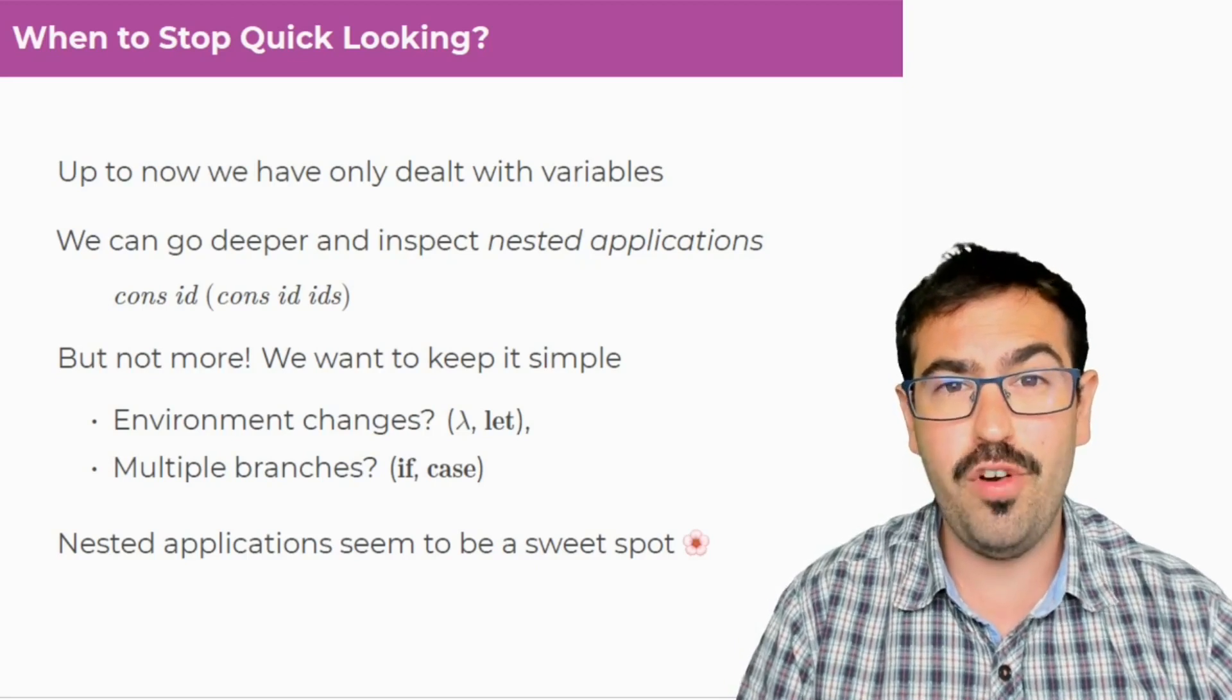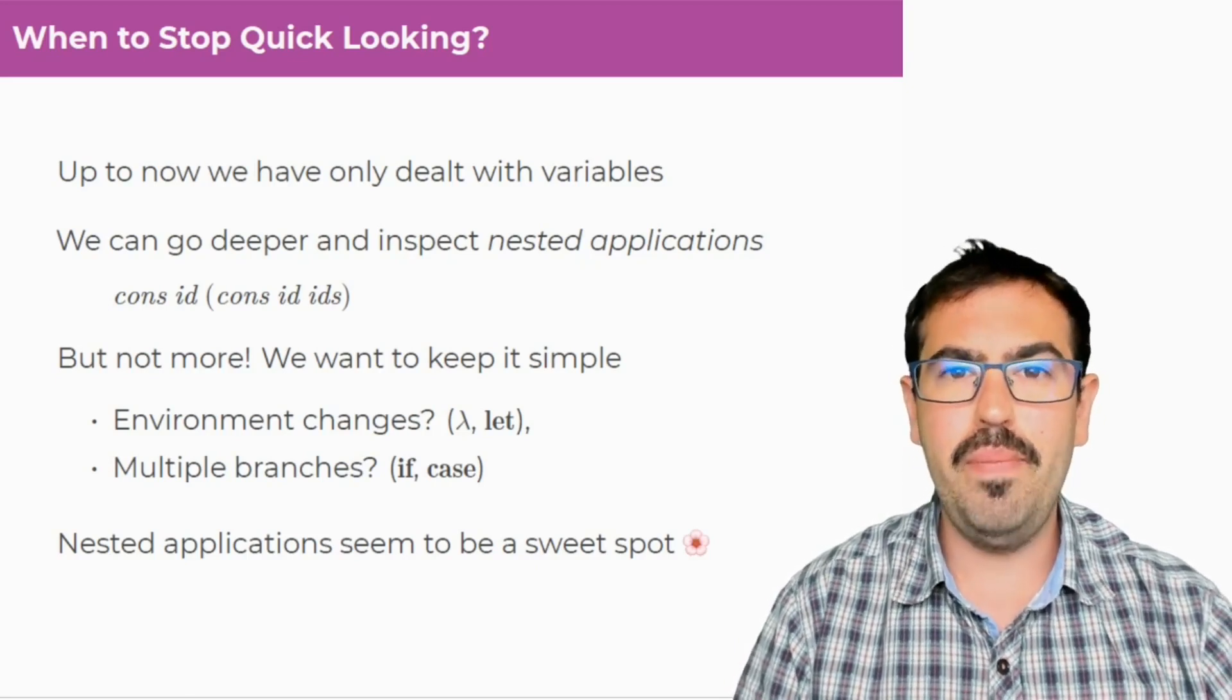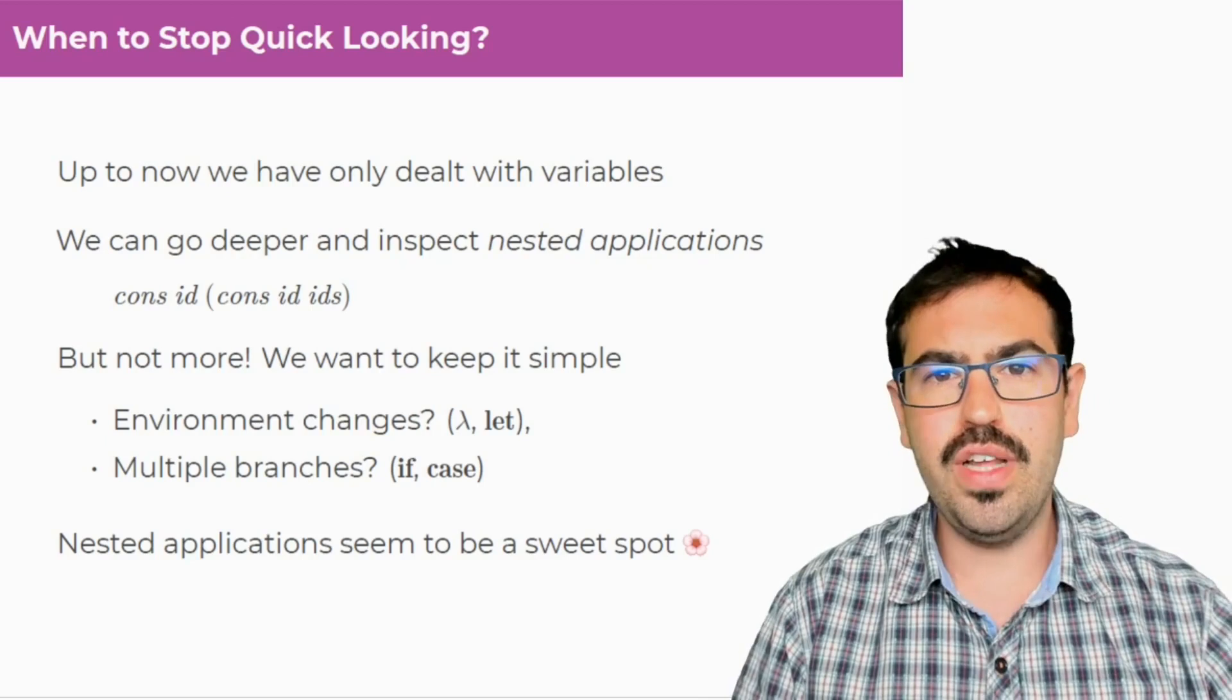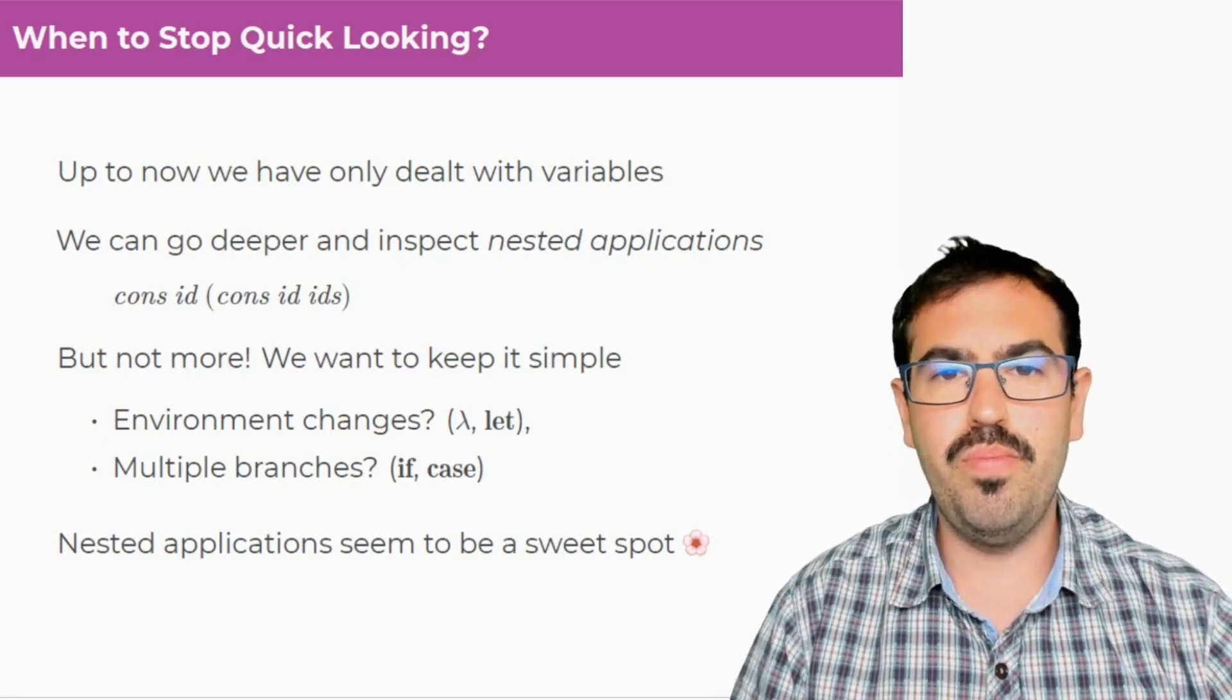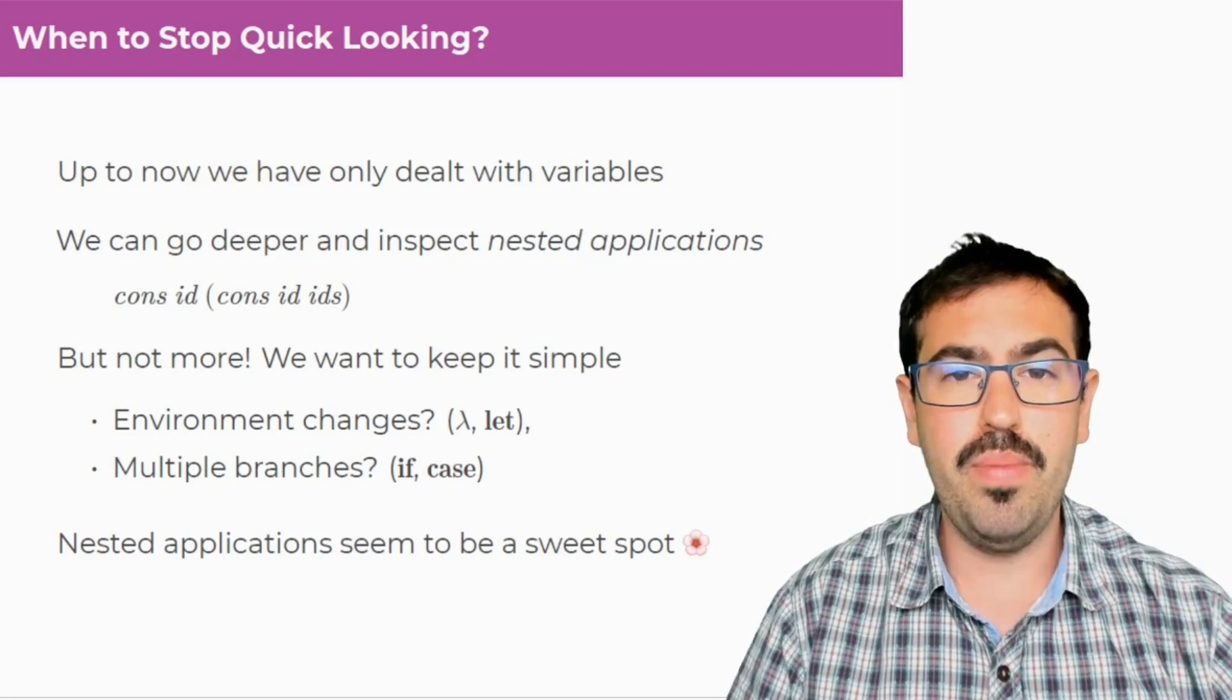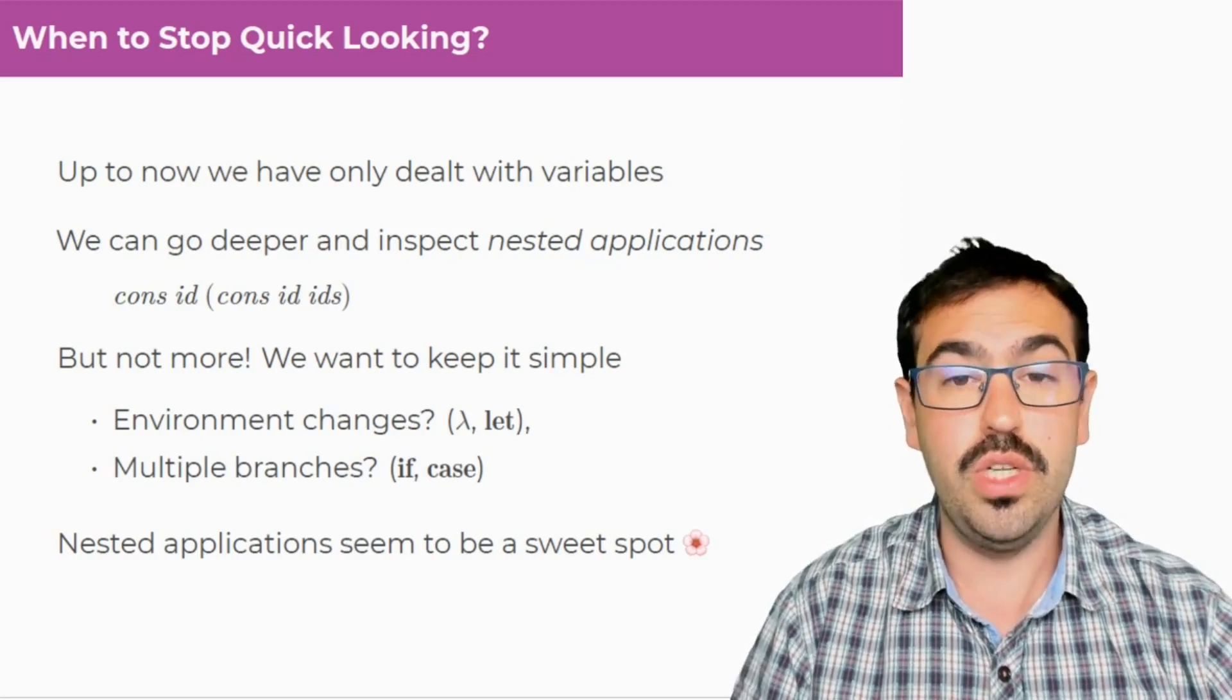So we just really want to keep it simple. We found that nested applications seems to be a sweet spot. You really gain a lot of information by looking at nested applications. And for the rest of the cases, you often get information pushed by the bidirectional typing mechanism. So this is a sweet spot.